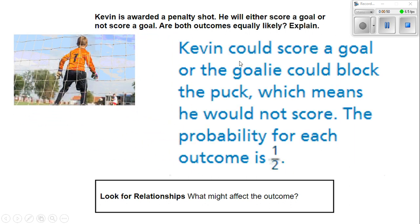Kevin could score a goal or the goalie could block the puck, which means he would not score. The probability for each outcome is one half.